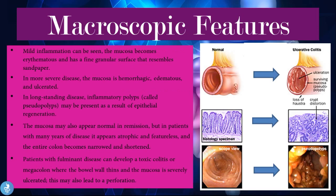Continuing with macroscopic features: in mild inflammation, the mucosa becomes erythematous with a fine granular surface resembling sandpaper. In more severe disease, the mucosa is hemorrhagic, edematous, and ulcerated. In long-standing disease, inflammatory polyps called pseudopolyps may be present as a result of epithelial regeneration. The mucosa may appear normal in remission, but in patients with many years of disease, it appears atrophic and featureless, and the entire colon becomes narrowed and shortened. Patients with fulminant disease can develop toxic colitis or megacolon, where the bowel wall thins and the mucosa is severely ulcerated, which may lead to perforation.